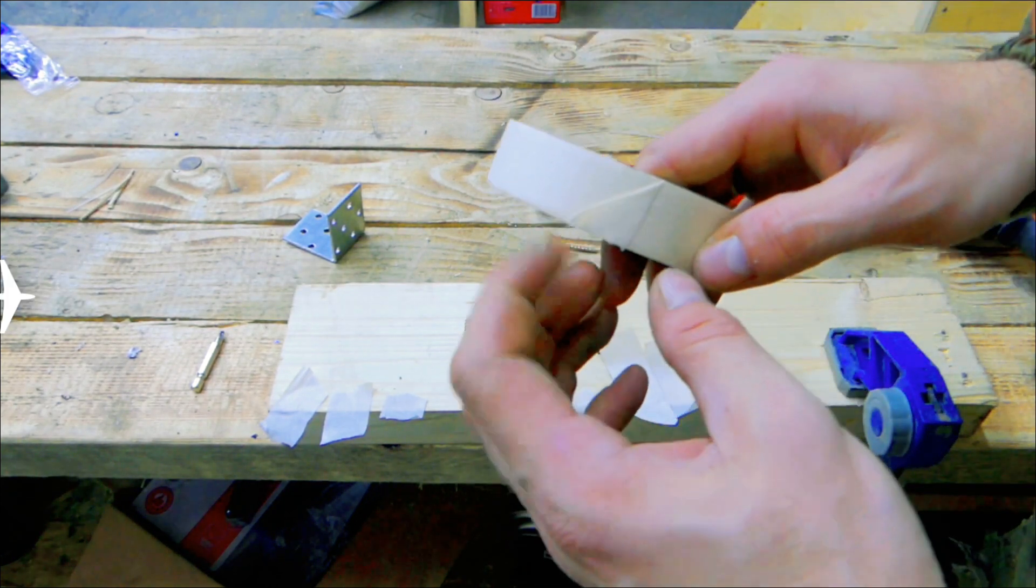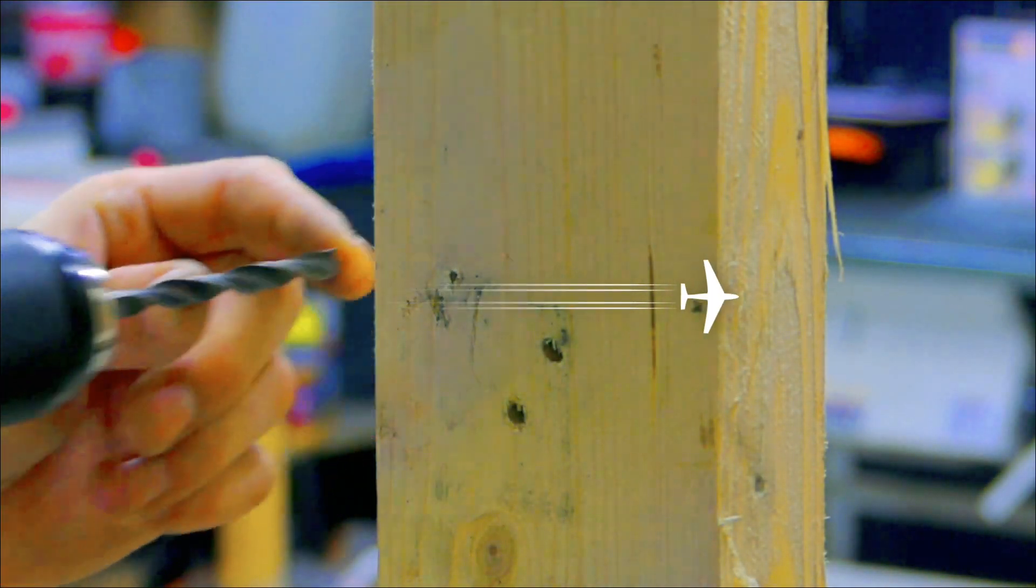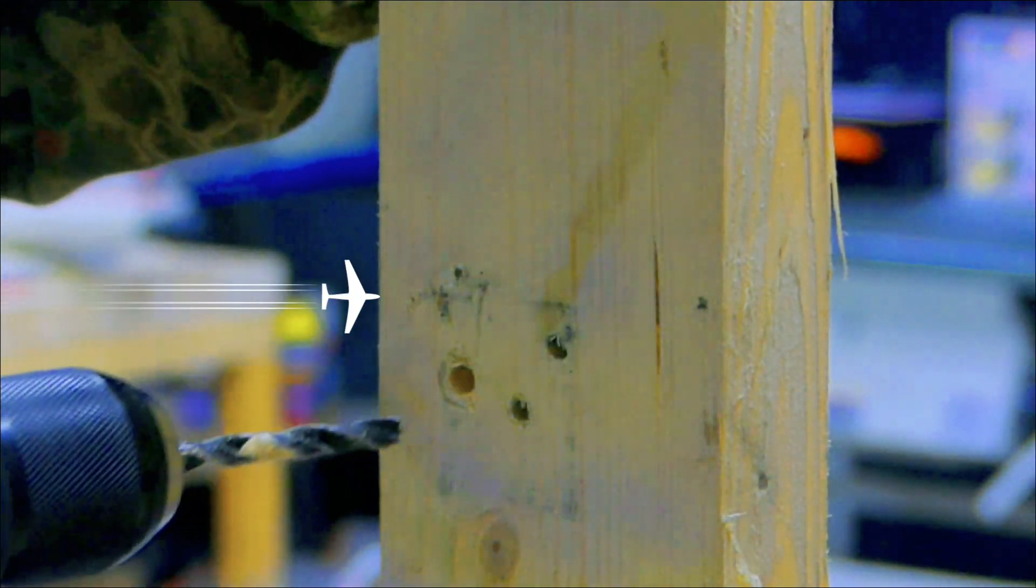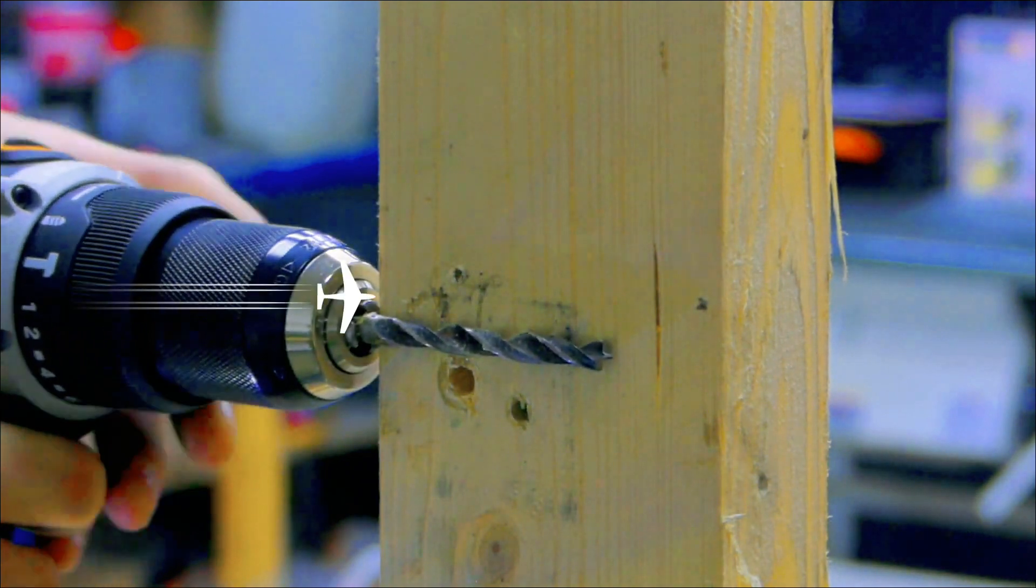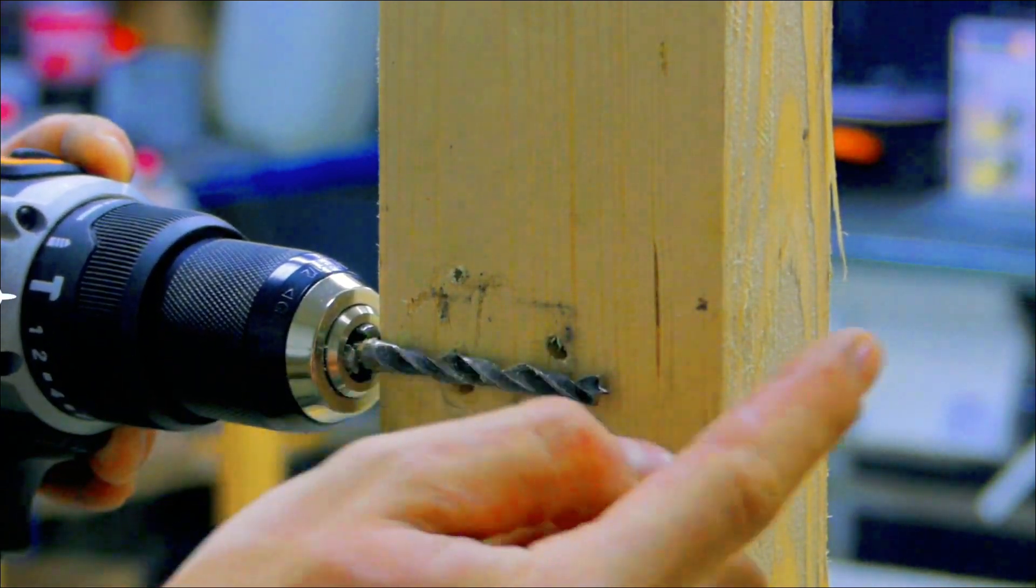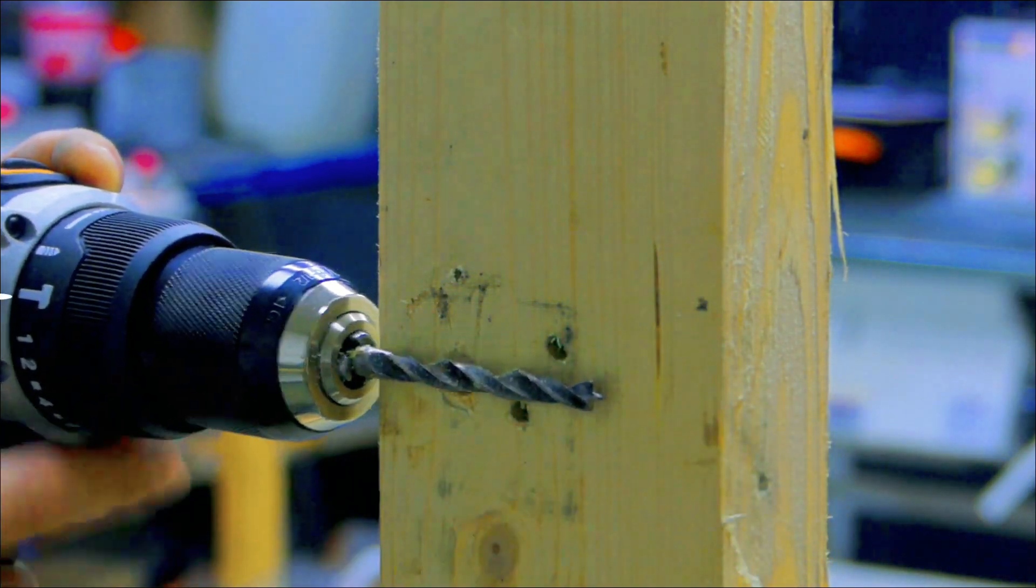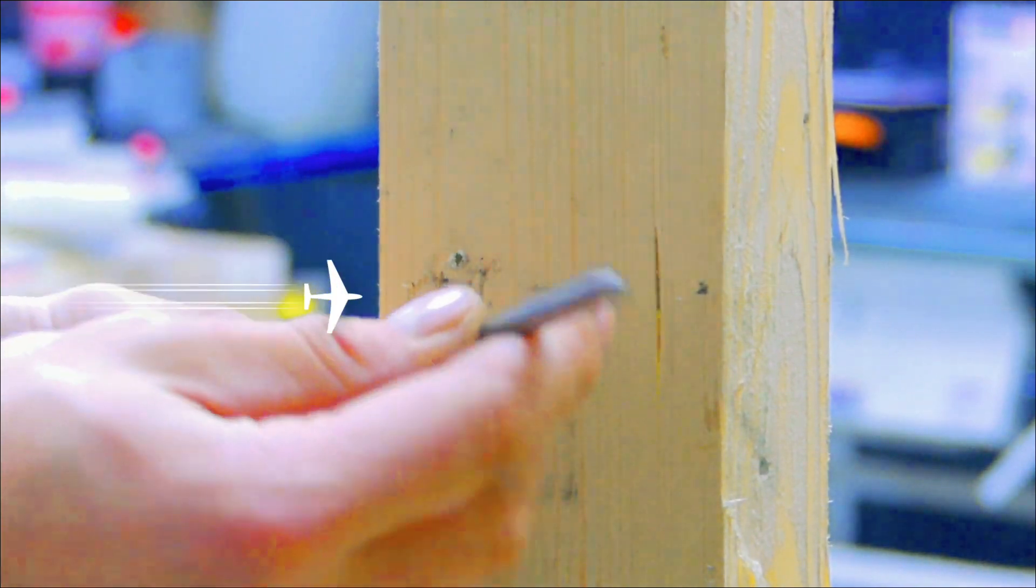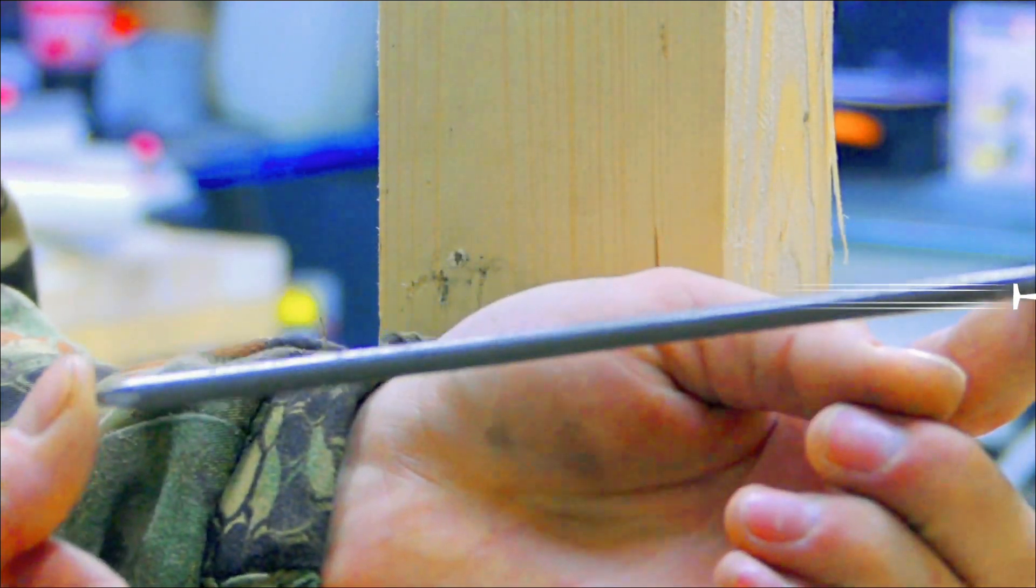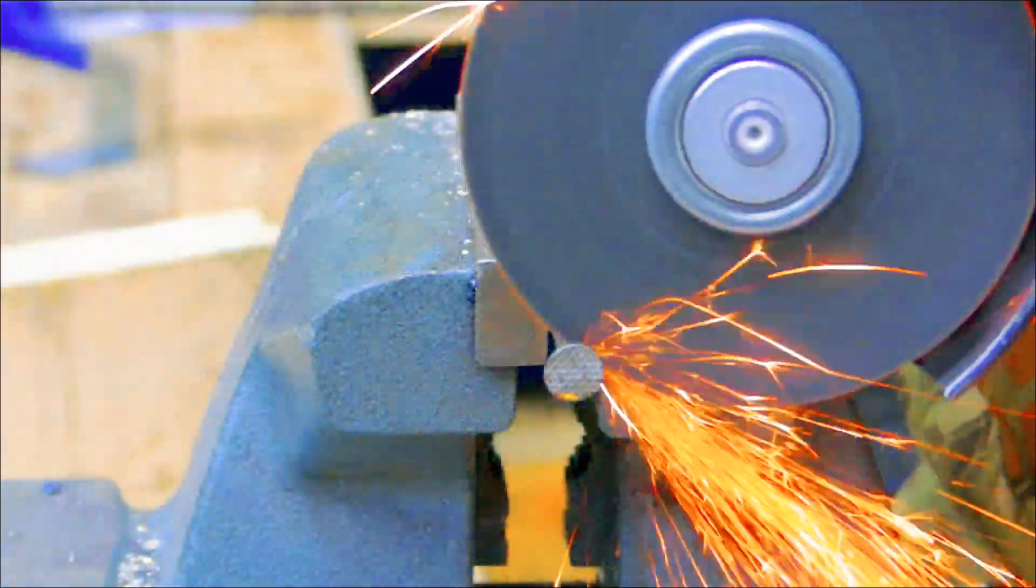Engineered wood products, glued building products engineered for application-specific performance requirements, are often used in construction and industrial applications. Glued engineered wood products are manufactured by bonding together wood strands, veneers, lumber, or other forms of wood fiber with glue to form a larger, more efficient composite structural unit. These products include glued laminated timber, wood structural panels including plywood and oriented strand board.